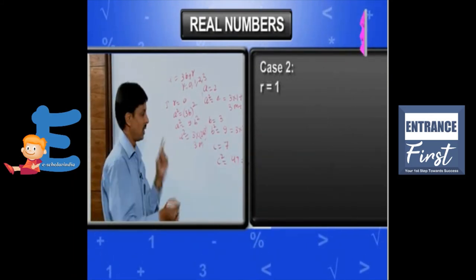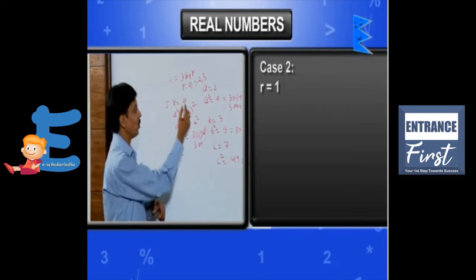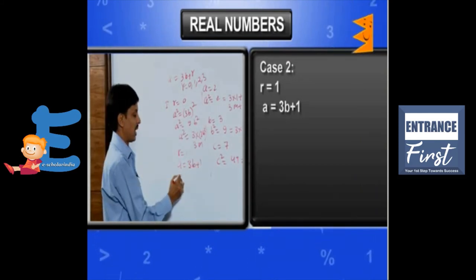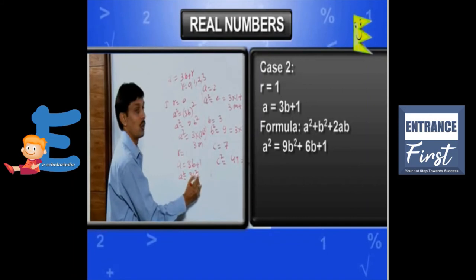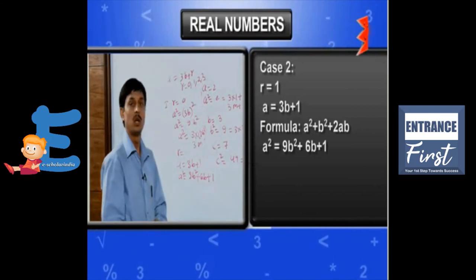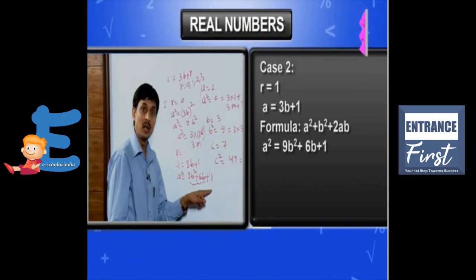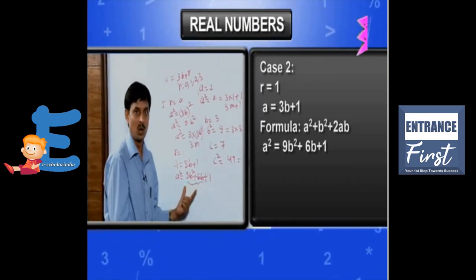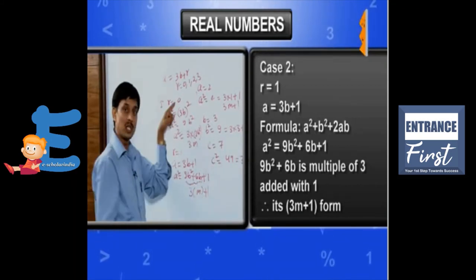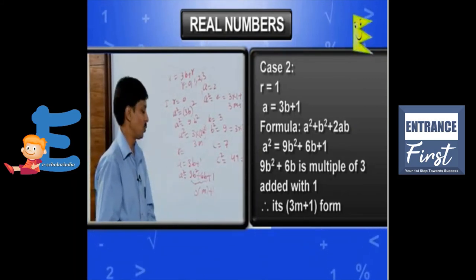Case 2: R equals 1, so A equals 3B plus 1. Squaring this: A squared equals 9B squared plus 6B plus 1. Using the identity (A+B)² = A² + 2AB + B², the part 9B squared plus 6B is a multiple of 3, added by 1. So this is again a multiple of 3 plus 1, confirming the form 3M plus 1.